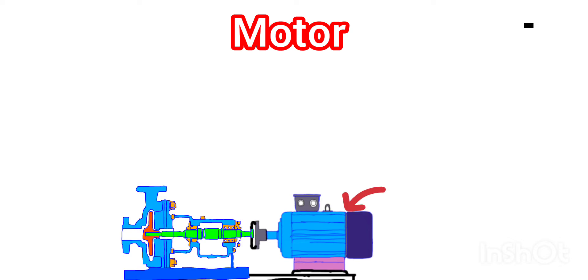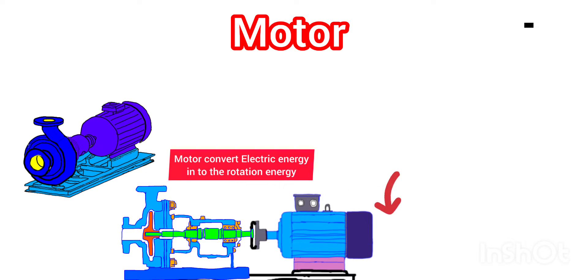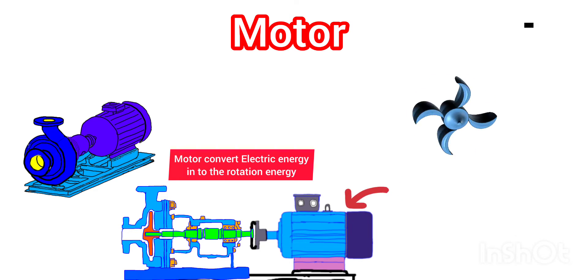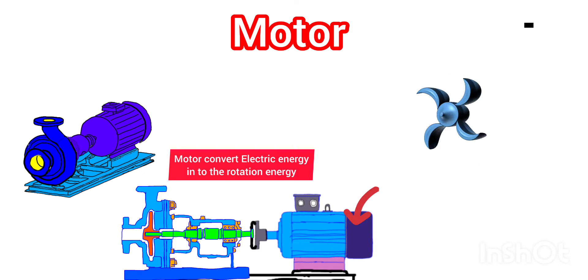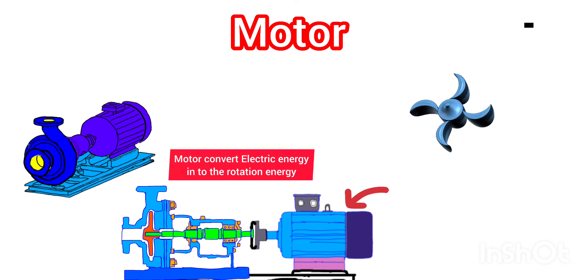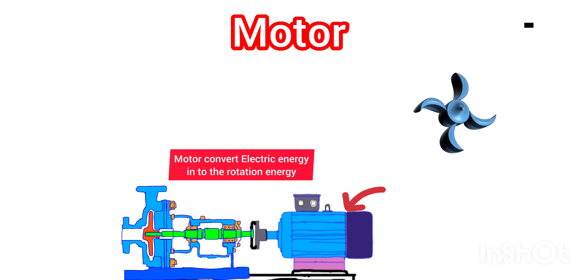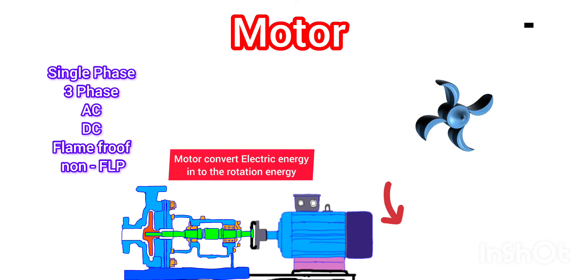The first component of the centrifugal pump is the motor. The motor is an electro-mechanical device. It converts electrical energy into mechanical energy — it takes electrical energy as input and delivers mechanical energy as output.